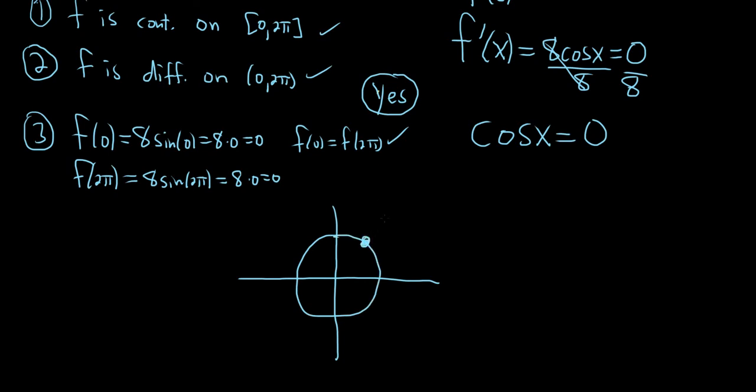And on the unit circle, every ordered pair can be thought of as being an ordered pair of the form (cosine θ, sine θ). And here the angle is 0. Here it's π/2. Here it's π. And here it's 3π/2. So we want the places where the x-coordinate is 0. Right, because cosine is the x-coordinate.